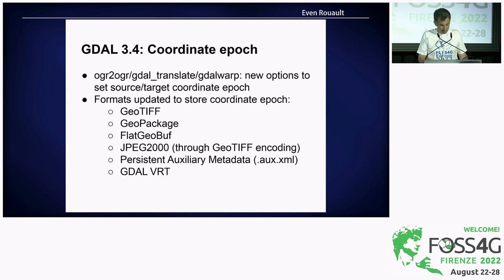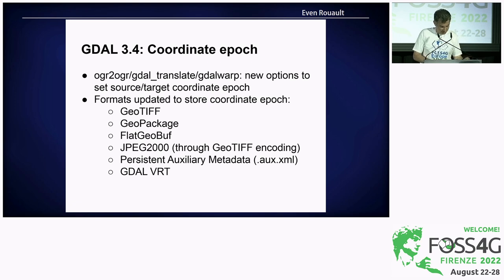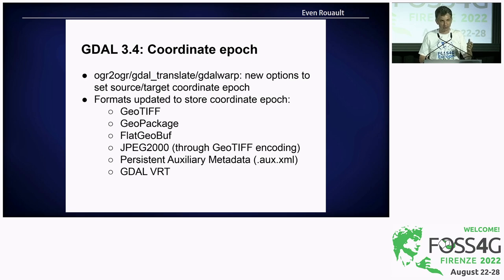The main GDAL and OGR utilities have been updated to specify a source and target coordinate epoch. We have also worked with format specifications to store that coordinate epoch in a standardized way in popular formats like GeoTIFF, GeoPackage, and FlatGeobuf, and in GDAL-owned formats the VRT and the .aux.xml sidecar file. That said, if you have the choice, I'd suggest not using dynamic CRS when you can, but rather use static plate-fixed CRS to avoid all the complication of coordinate epochs and time-dependent coordinate transformations.